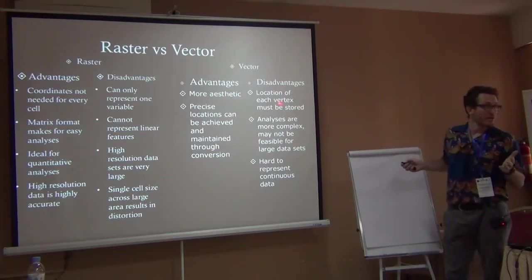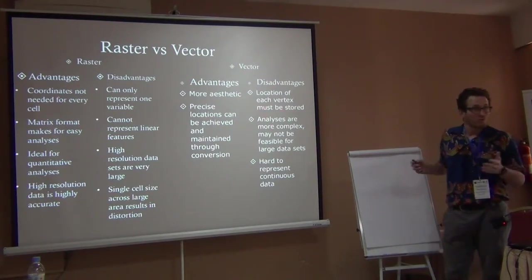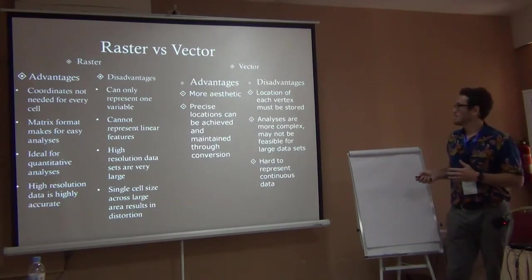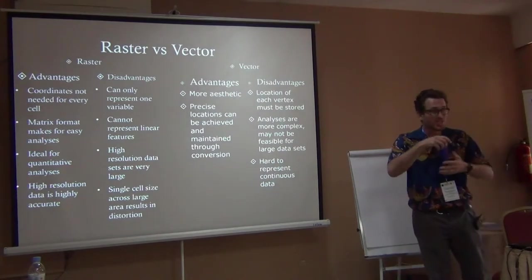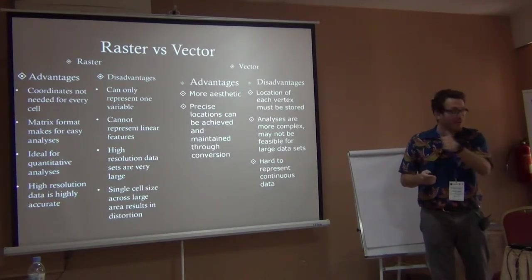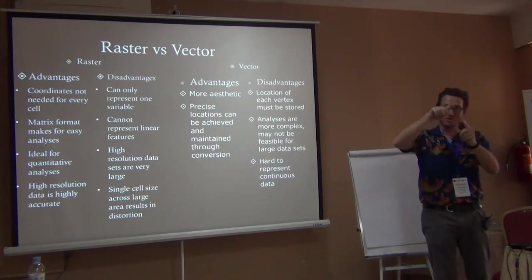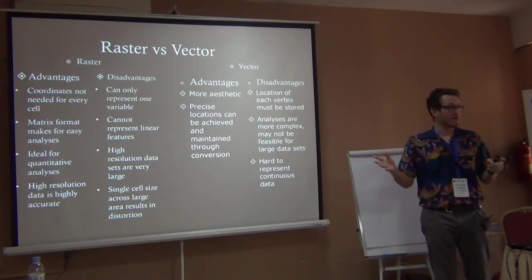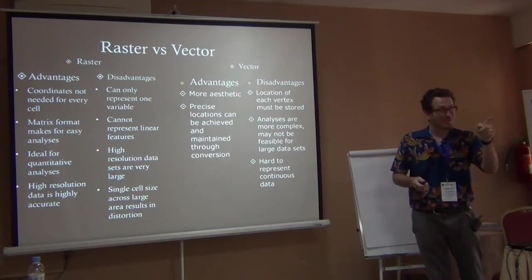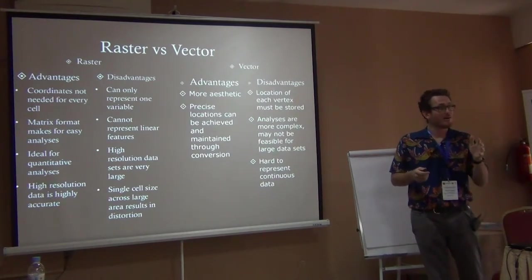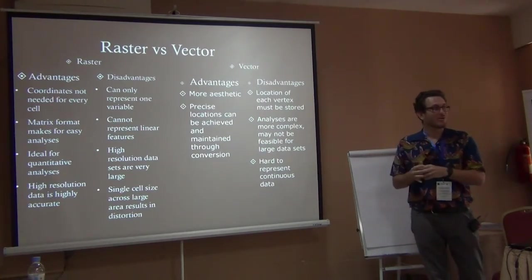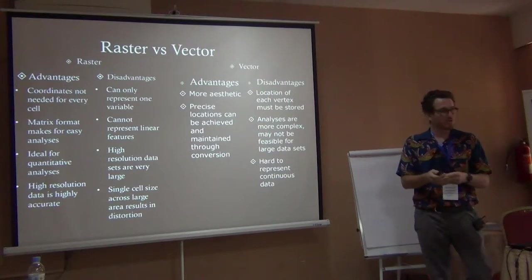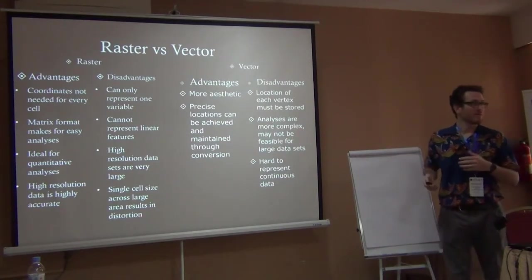But you have to store each of those locations, so if you have a really big, very precise data set it's going to take up a lot of space. The analyses can also be more complex because the geometries are more complex — you don't have a simple grid. The computer has to calculate trigonometry between points in order to get the area, whereas with raster you can just count the cells.